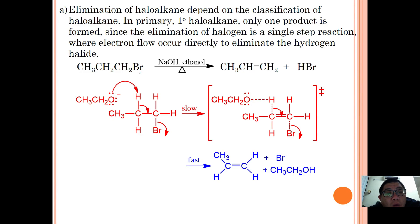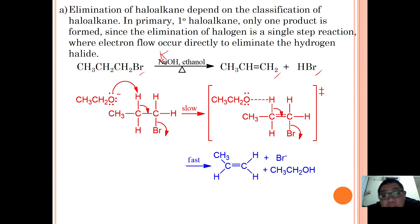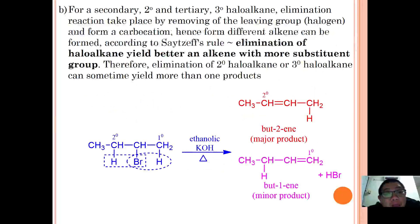For example, 1-bromopropane reacted with potassium hydroxide in ethanol under reflux forms propene and hydrogen bromide. This mechanism is an illustration to understand how the reaction takes place, but you don't need to memorize it.